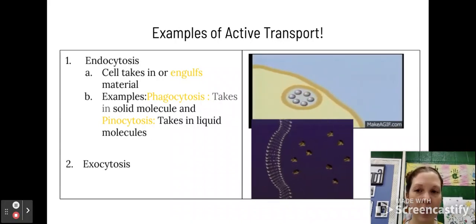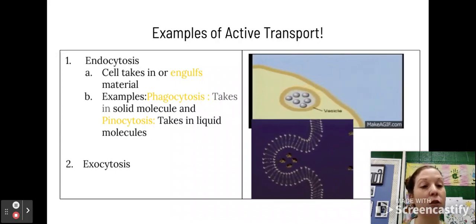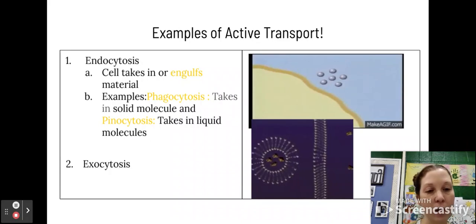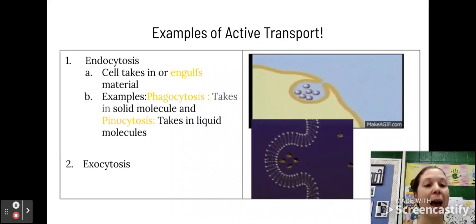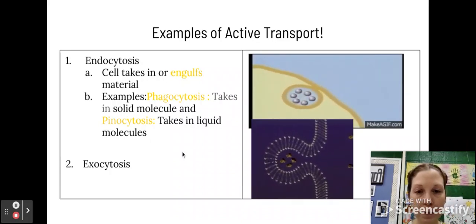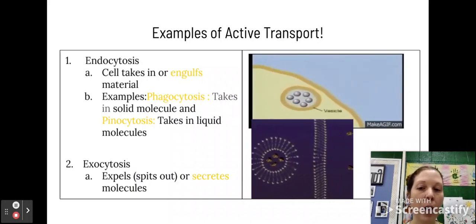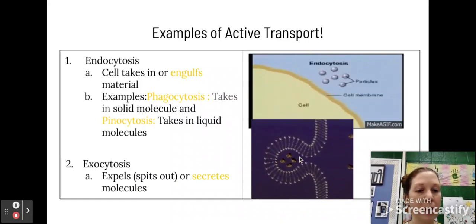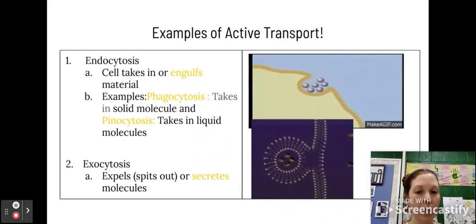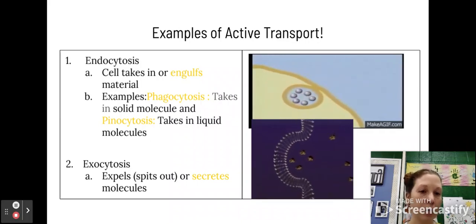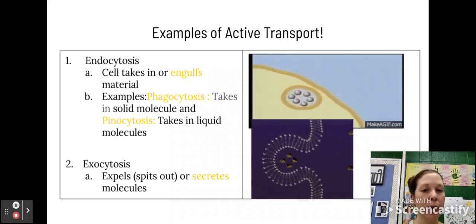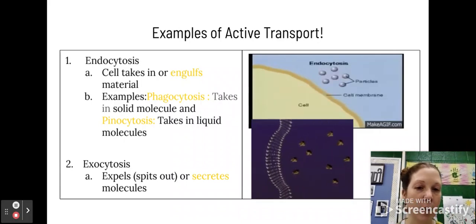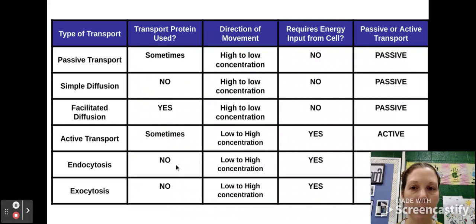And then we also have exocytosis. So think about this. Endo means into the cell, so we're bringing stuff into the cell. Exocytosis, think exit, we're taking stuff out of the cell. So this will expel or spit out molecules. So as you can tell in this bottom GIF, the cell membrane kind of expands itself to let a certain number of particles or material get kind of trapped. It'll cut itself off and eliminate that bit of material with the membrane.